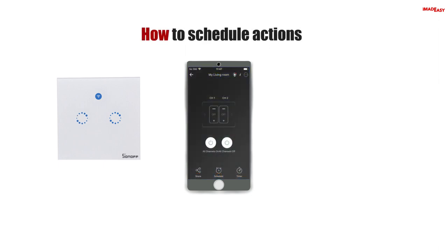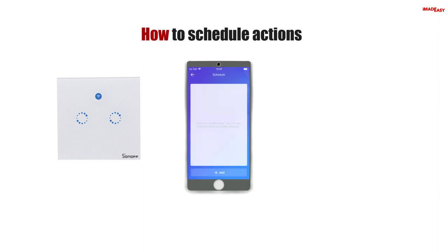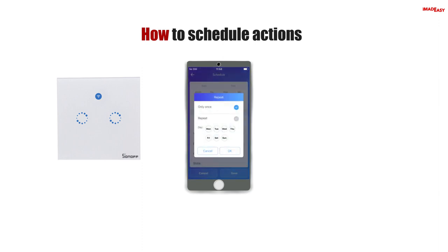Press the switch you want to create a schedule for. Press the stopwatch button in the bottom center, then press the add button. In this screen you can choose at what time you want the switch to turn on or off. You can choose if you want to repeat the action — either run it only once or repeat it on specific days. This switch has two channels, so you can decide which channel you want to schedule.